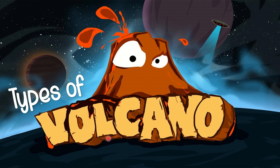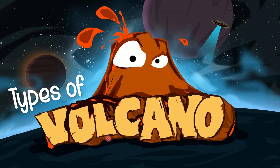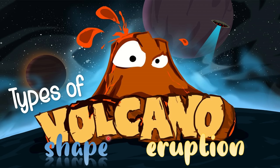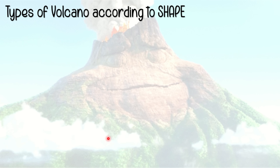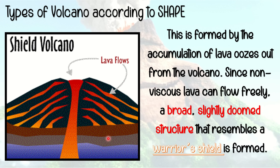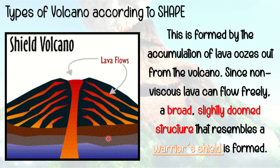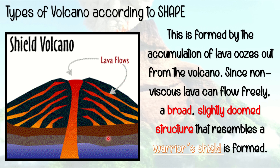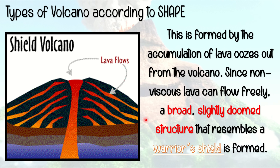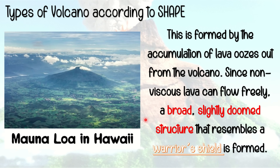Now let us proceed to the different types of volcano. Volcanoes can be classified according to its shape and according to its eruption. The first type according to shape is the shield volcano, which is formed by the accumulation of lava that oozes out from the volcano. Since non-viscous lava can flow freely, a broad, slightly domed structure that resembles a warrior's shield is formed. An example is Mauna Loa in Hawaii.